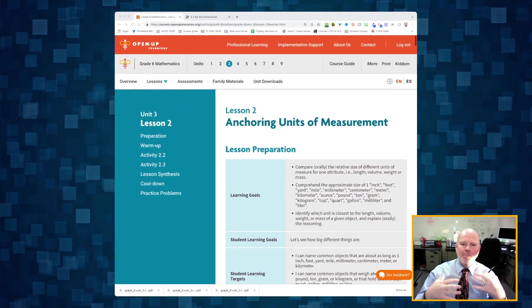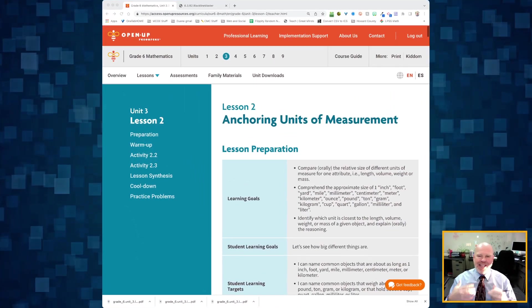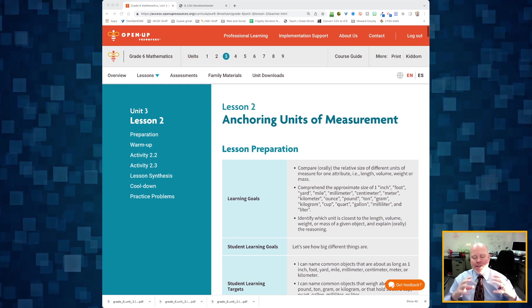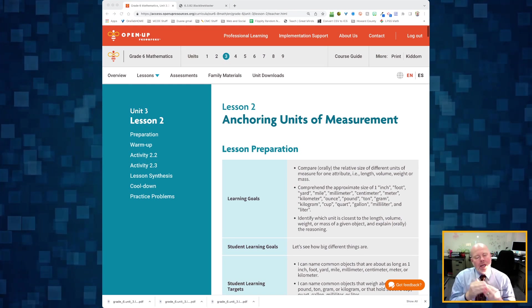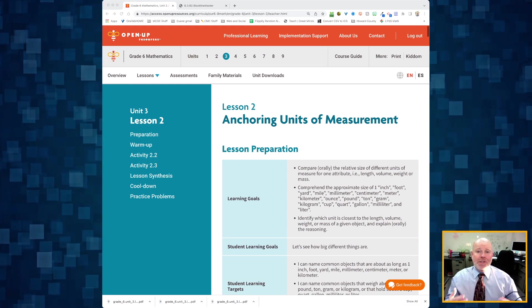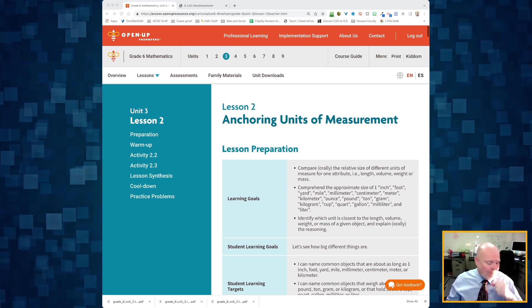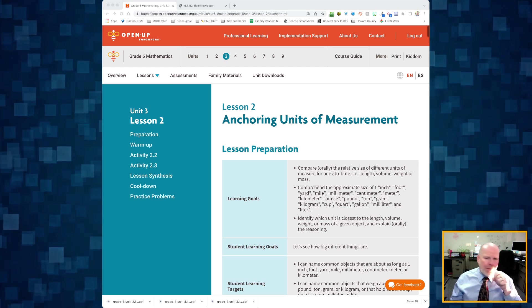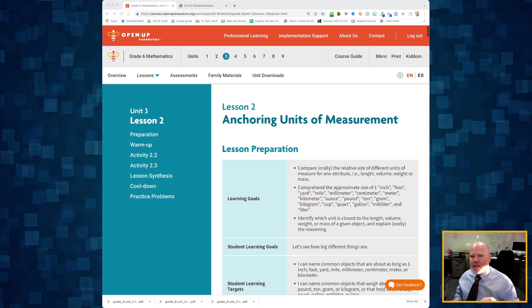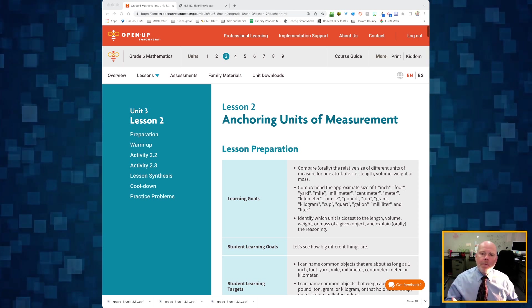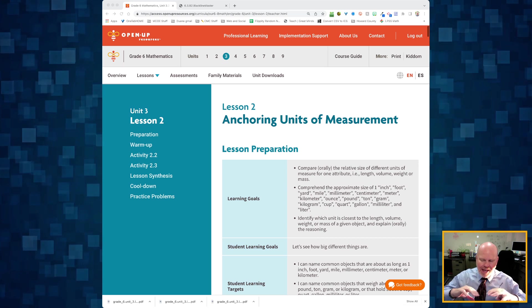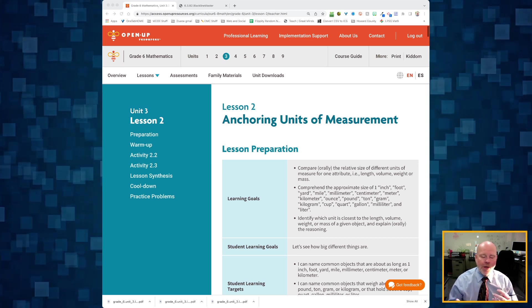Alright, this is Grade 6, Unit 3, Lesson 2. In this lesson, students are going to be playing with units of measurement and using that as the context for an entryway towards understanding ratios and proportions, mostly ratios. But this lesson, Lesson 2, is really an optional lesson because it just helps students anchor themselves in terms of what these various units of measure are.